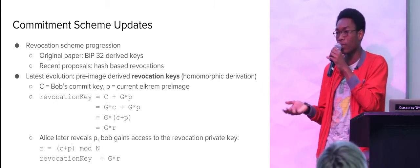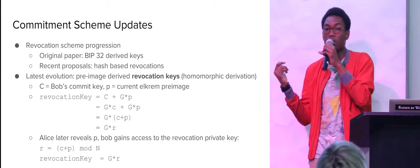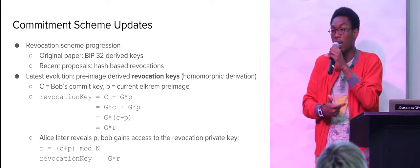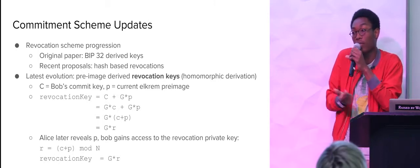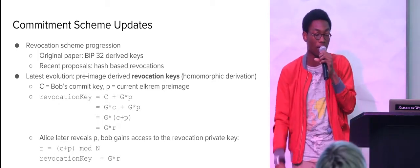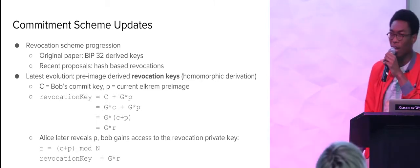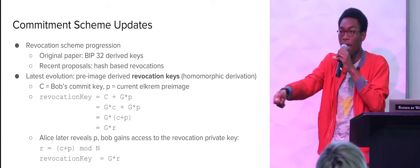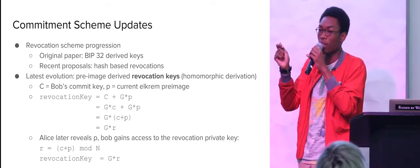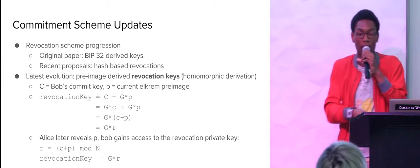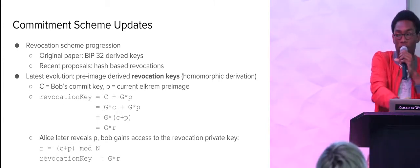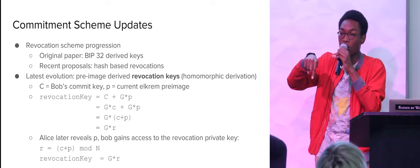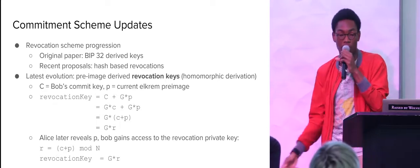With this we get more compact scripts and everything is slightly more efficient. This technique is also used in pay-to-contract hash, where a merchant can derive a payment address from an initial hash, and you can prove in court they knew about the contract because they couldn't derive the private key without it. It's also used in vanity address generation, where you give a vanity address generator a single key and they just add points together — point addition is much faster than elliptic curve scalar multiplication. You can also use double scalar multiplication to compute G×C + G×P in a single step.